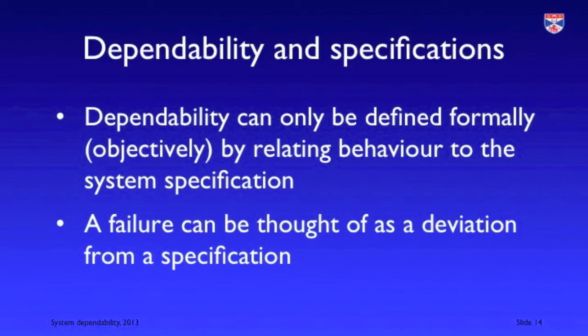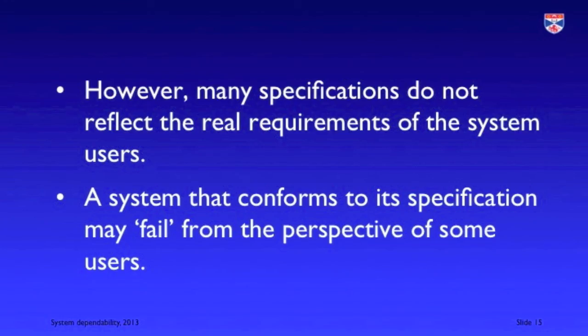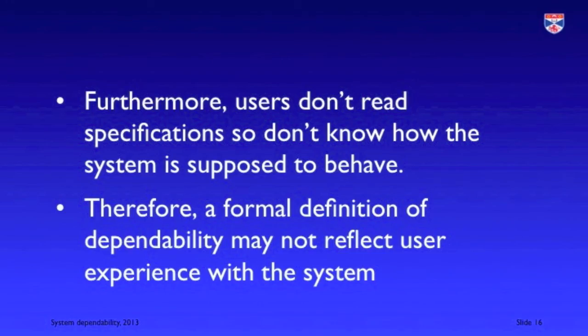If we talk about dependability in formal terms, we really have to make reference to the system specification. The system specification defines its behaviour, and if we see the system behaving differently then we can say it's exhibiting undependable behaviour. But there are two problems here. The first is that the specification may not reflect the real needs of the system users — more often than not that's the case, partly because the needs of users change over time much more quickly than the specification can be updated. It's also the case that users don't read specifications, so they don't know what the specification says. They come to the system with a set of expectations and these are what they use to judge its dependability.